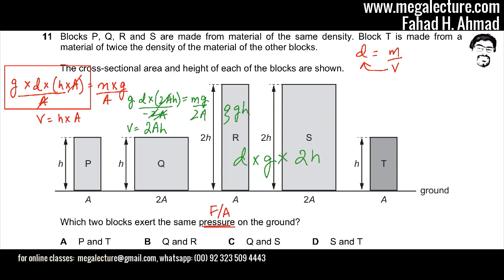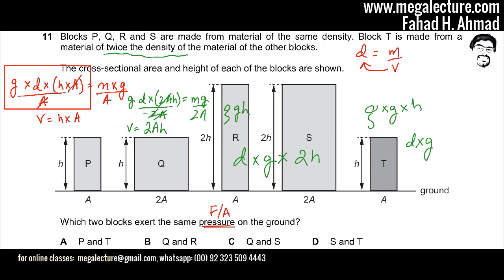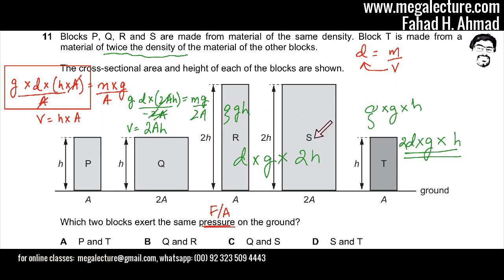Now calculating pressure for block T using ρGH: block T has twice the density of the other blocks, so density = 2D, and its height is H. Therefore pressure = 2D × G × H. Comparing this to R and S, which gave D × G × 2H, the expressions are identical — so T exerts the same pressure as R and S.